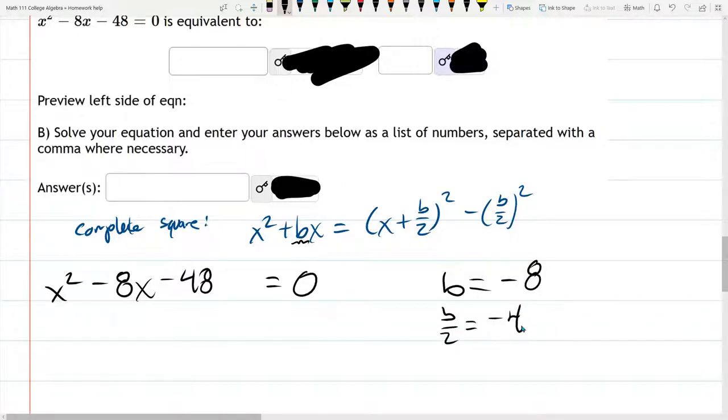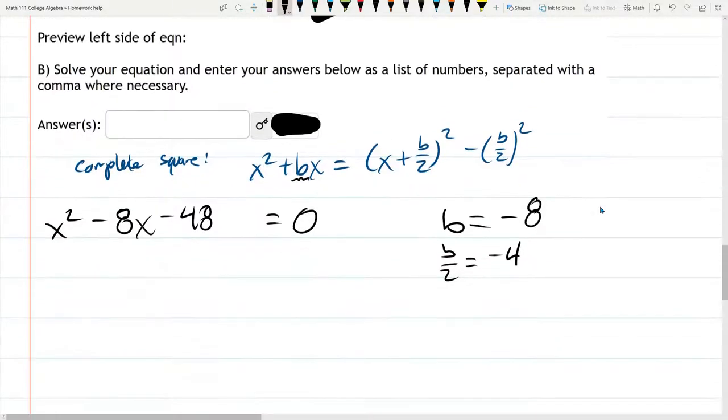Half of that is negative 4. Now, sometimes your b will be odd, and so b over 2 will be a fraction, and that's okay. Just be careful when you square it, depending on what you're doing.